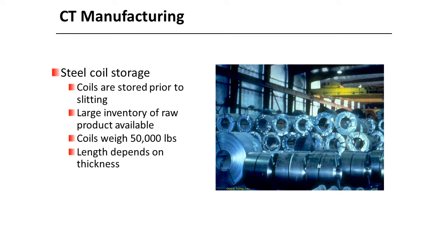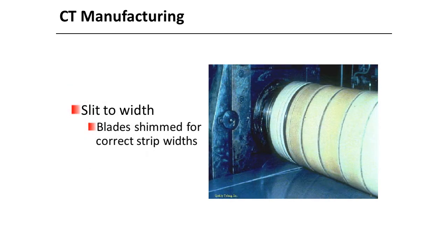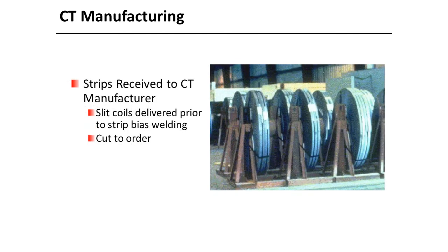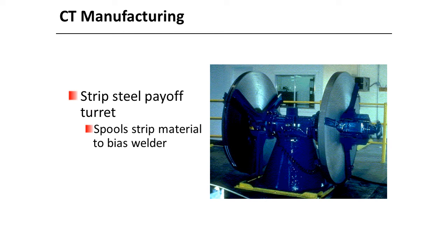Steel coils are stored prior to slitting, with a large inventory of raw product available. Coils weigh approximately 50,000 pounds, and length depends on thickness — ranging from 1,000 feet at 0.250 inch up to 3,500 feet at 0.087 inch. Strips received at the coiled tubing manufacturer are slit coils delivered prior to strip bias welding, cut to order. A photo shows the strip steel payoff turret, which spools strip material to the bias welder.